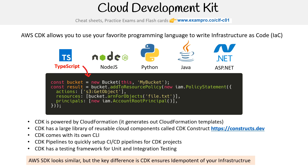If you use CDK to say, give me a virtual machine, you'll always have a single virtual machine, because it's trying to manage the state of the infrastructure. Whereas when you use SDK, if you run it every time, you'll end up with more and more servers, and it's not really managing state. Hopefully that is clear between the difference there.